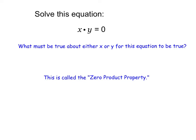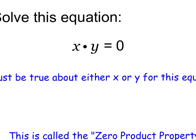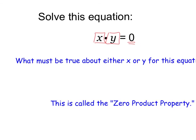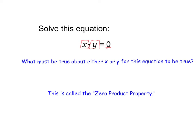The first question says, what must be true about either x or y for this equation to be true? If we look at x times y equals zero — if you know anything about math, if you multiply two things together to equal zero, anything times zero is zero. So, either x or y must be zero. It could be that both x and y are zero, but at least one of them must be zero for this to be true.